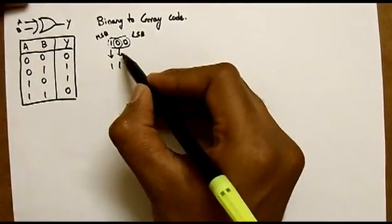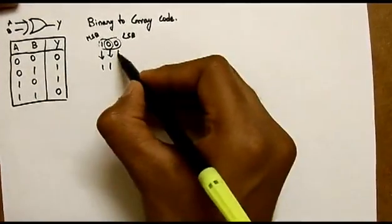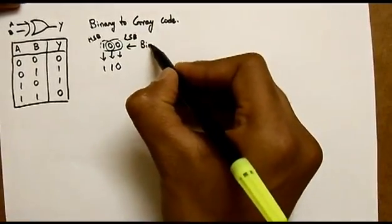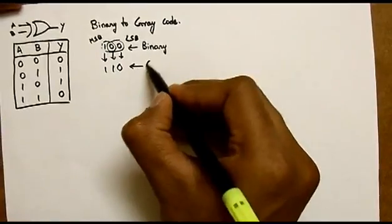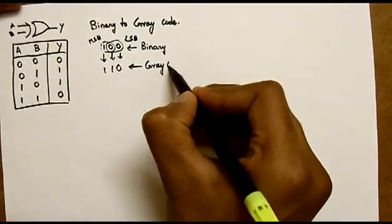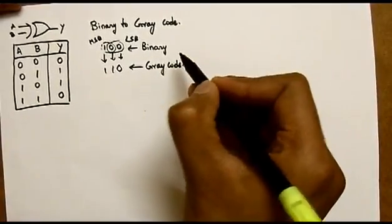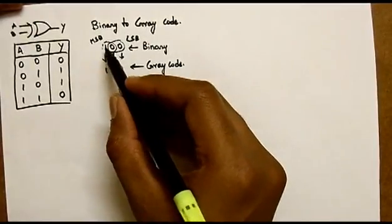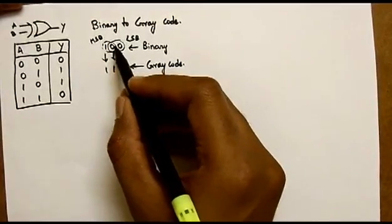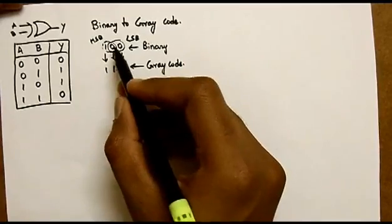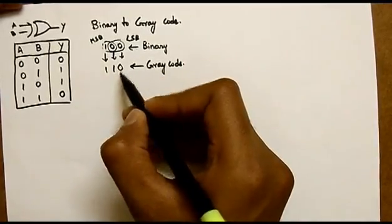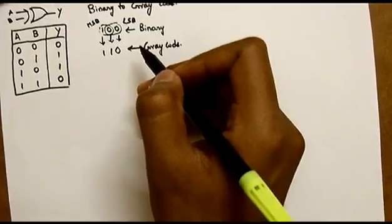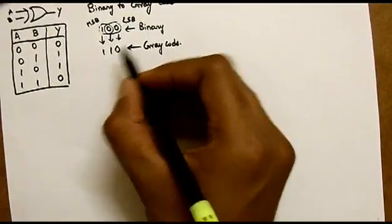0 and 0 XOR is 0. That's it — we have got our equivalent gray code. We take the MSB as it is, then XOR horizontally: 1 and 0 XOR is 1, 0 and 0 XOR is 0. We get the equivalent gray code.